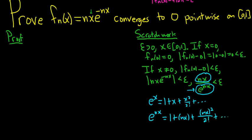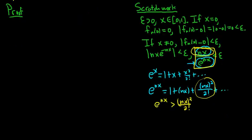We can compare e to the nx to a term of degree greater than 1, since we have a degree-1 polynomial in the numerator. So this infinite sum is certainly greater than (nx) squared over 2 factorial. In our inequality we have e to the nx in the denominator, so solving for 1 over e to the nx by multiplying by the reciprocal gives us: 1 over e to the nx is less than 2 over (nx) squared.